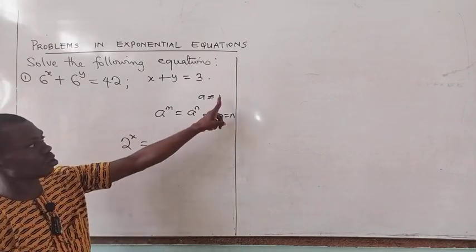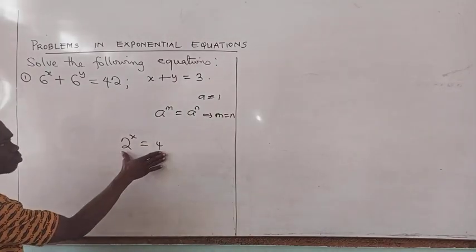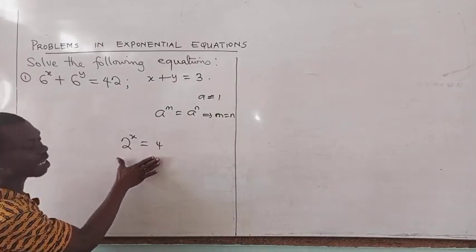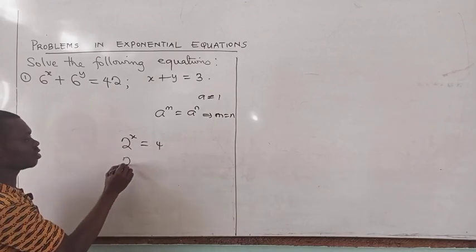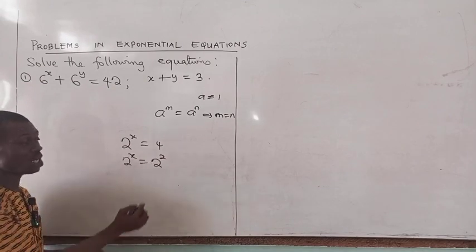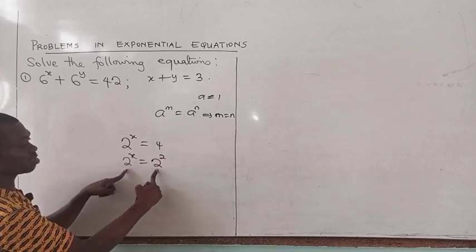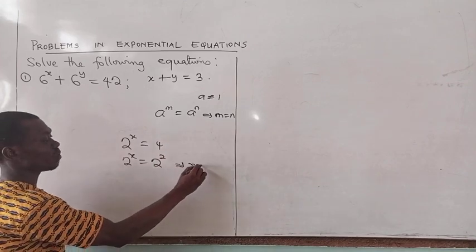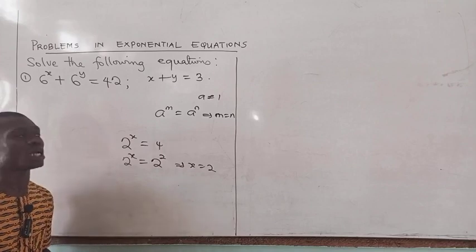So we always have this condition. Now, this is what we are going to apply in solving this. If I do 2 raised to power x equal to 2 raised to power 2, I can easily apply this. Since the bases are the same, therefore x is equal to 2, and that gives you the solution.